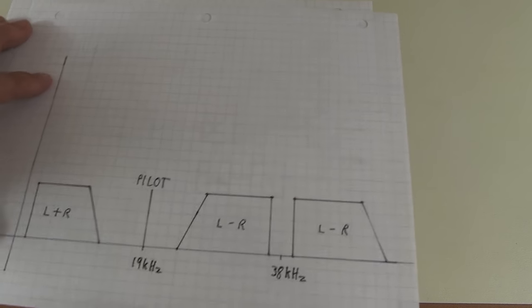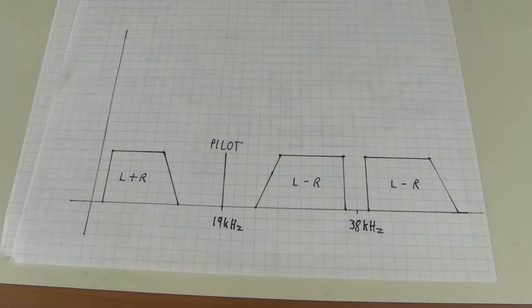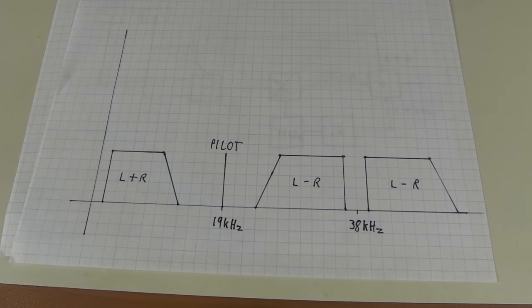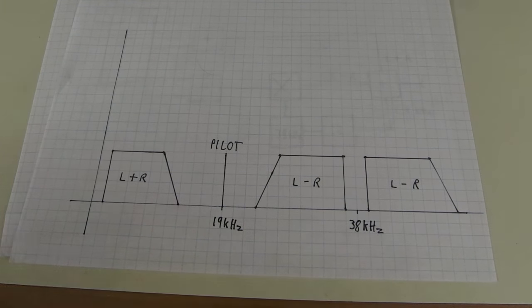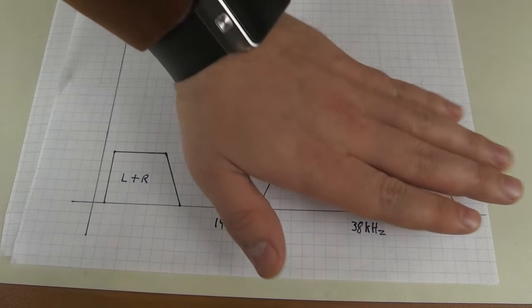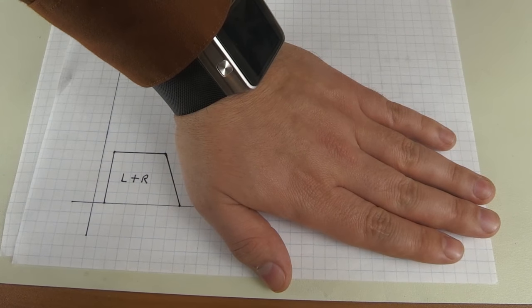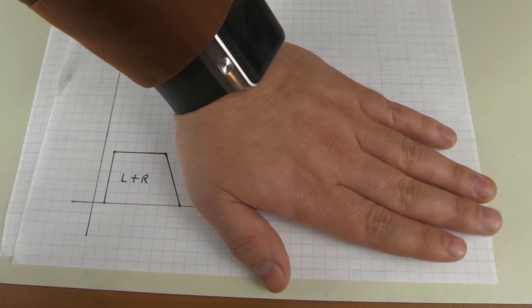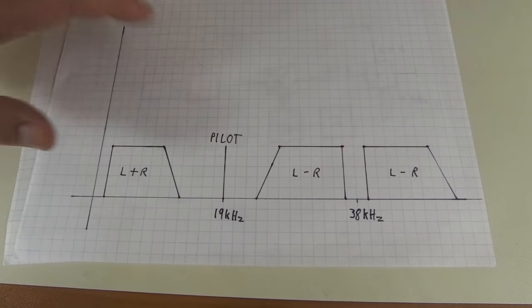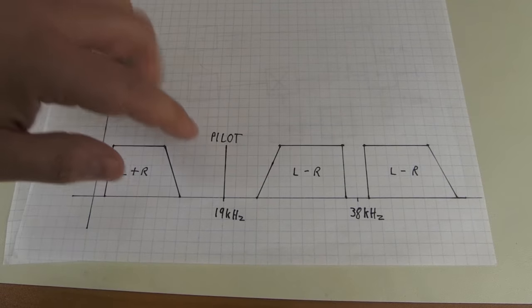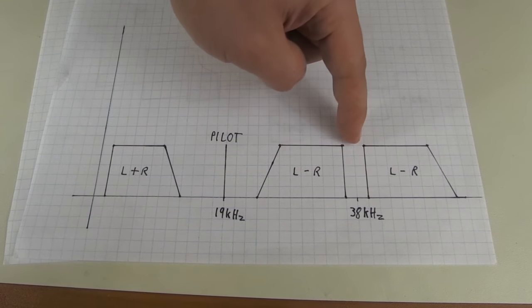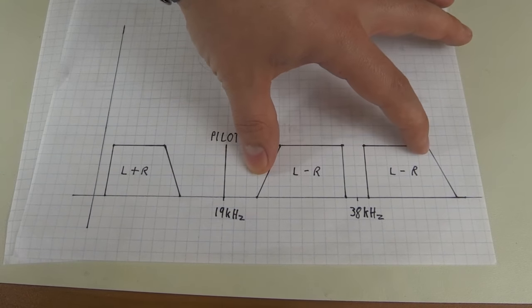So going back to the spectrum, this is really all the magic behind stereo coding a signal. A mono receiver will only see this. It'll only see the audio spectrum and it will sound off the left plus right. And a stereo receiver will recognize the 19 kilohertz, double them, place the carrier right here to decode the left minus right.